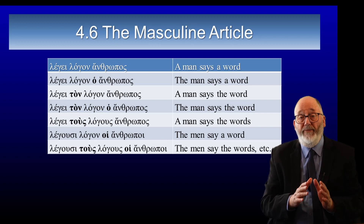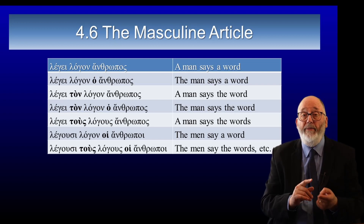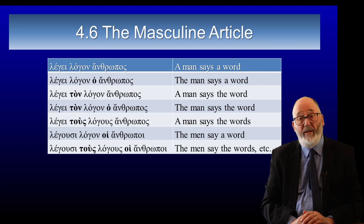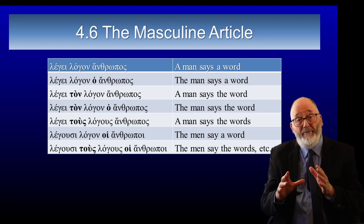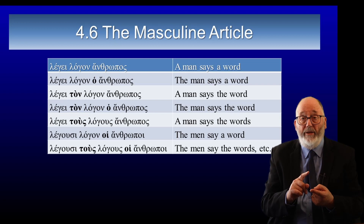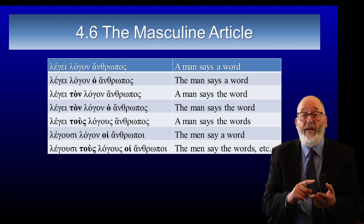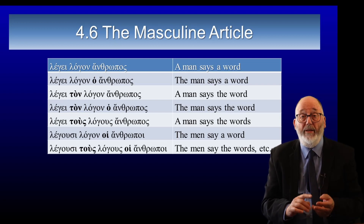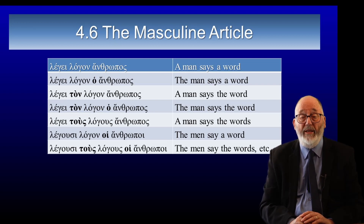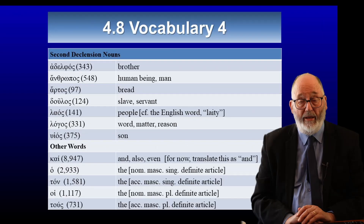The definite article has the same number and case as the noun it's associated with. And when we learn feminine nouns, you will find that they match not only number and case but also gender. So there are other definite article forms to learn when we get to feminine and neuter nouns.